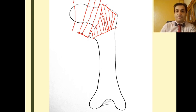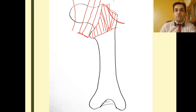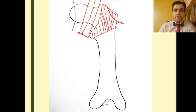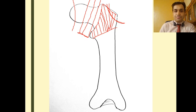Under intertrochanteric fractures, you can have isolated fractures of the greater trochanter as well. These are a separate clinical entity because of the attachment of gluteus medius and minimus to the tip of the greater trochanter, which are the main abductors of the hip joint.